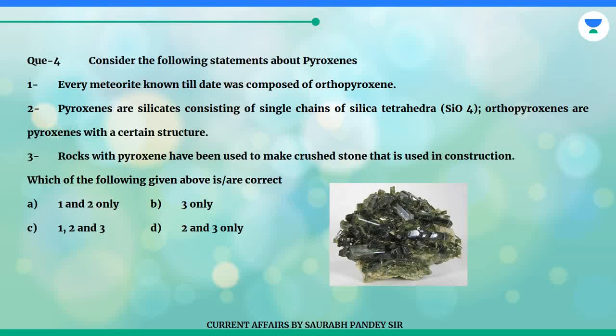Question 4. Consider the following statements about pyroxenes. 1. Every meteorite known till date was composed of orthopyroxene. 2. Pyroxenes are silicates consisting of single chains of silica tetrahedra (SiO4); orthopyroxenes are pyroxenes with a certain structure. 3. Rocks with pyroxene have been used to make a crushed stone that is used in construction.